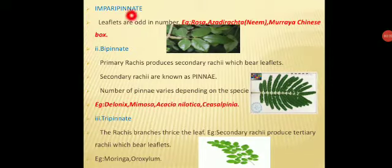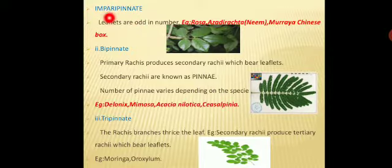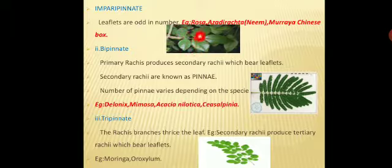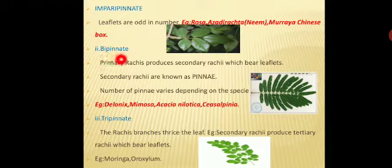Based on the unipinnate, one more classification is imparipinnate. In imparipinnate, 'impar' means not in a pair — the leaflets are odd in number. For example: rose, Azadirachta indica (neem), and Muraya, otherwise called Chinese box. Here there is a pair of leaflets, another pair of leaflets, and a single leaflet at the tip. This type is called imparipinnate.